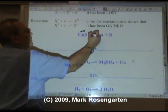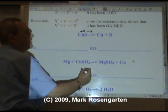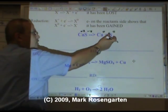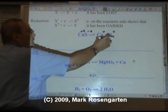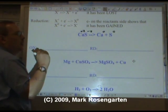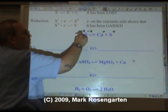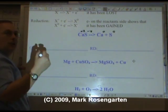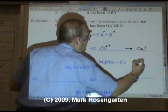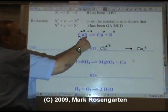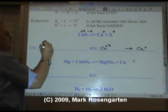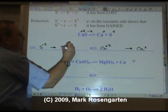Calcium is plus two, sulfide is minus two — you can verify that on the periodic table. These elements are by themselves, so they have no charge all by themselves. Calcium starts off as plus two and ends up as zero, so it's reduced. We write: calcium plus two ends up as calcium zero. Sulfur starts off as minus two and ends up at zero, so it was oxidized — S minus two turned into S zero.